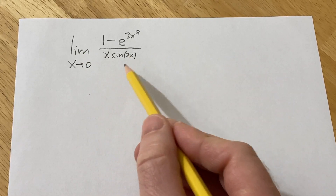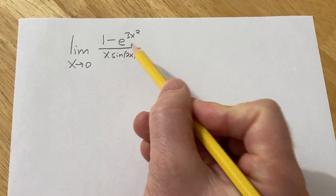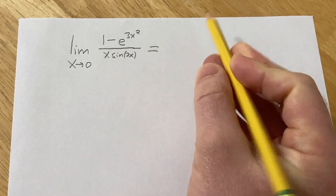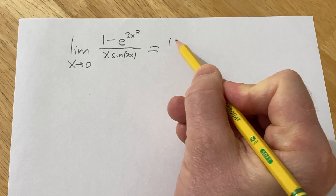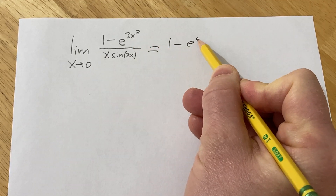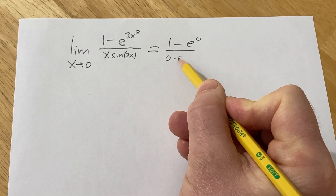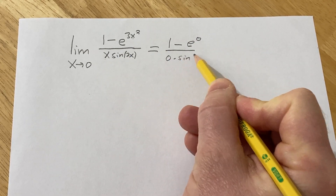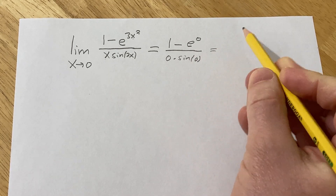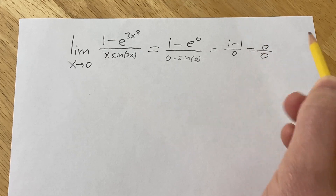The first thing you should always try to do when evaluating limits is plug in the value and see what happens. If we do that, we get 1 minus e to the 0 over 0 times the sine of 2 times 0, which is 0. So we end up with 1 minus 1 over 0, giving us 0 over 0.